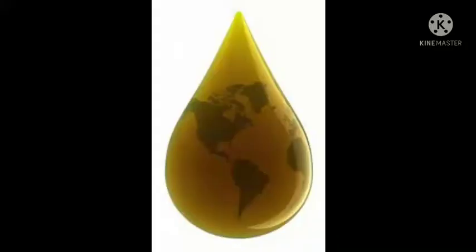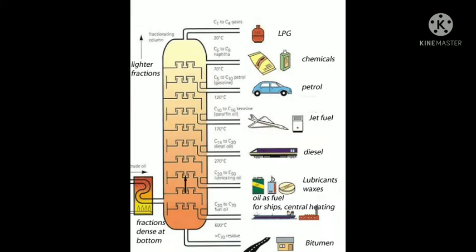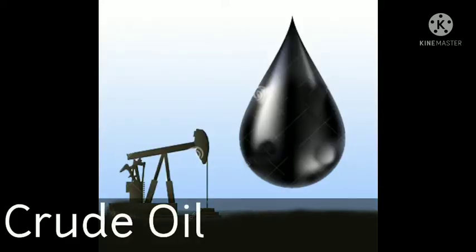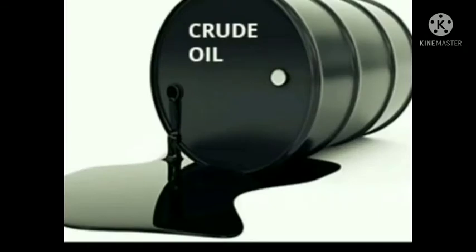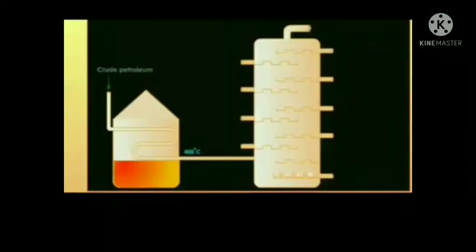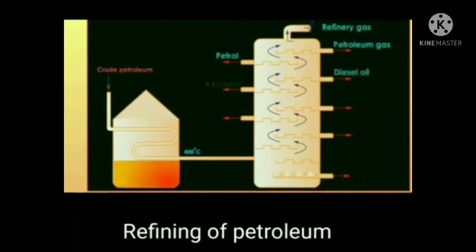Petroleum is a complex mixture of petroleum gas, petrol, kerosene, diesel, lubricating oil, fuel oil, paraffin wax, etc. It is known as crude oil because it cannot be used in the form in which it exists. We need to separate the various components of petroleum, so it has to be purified or refined.